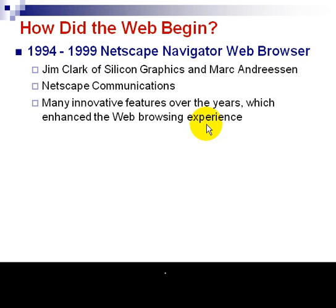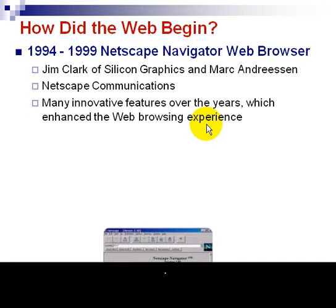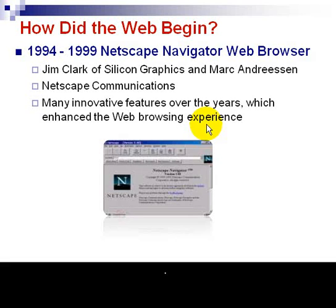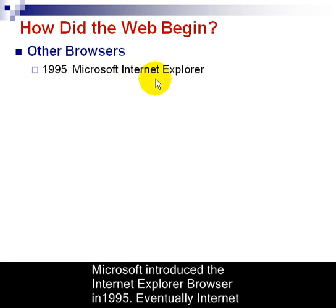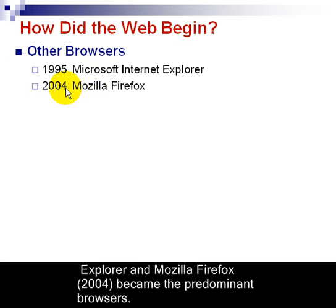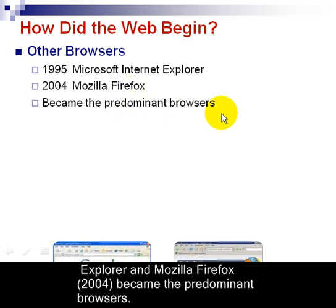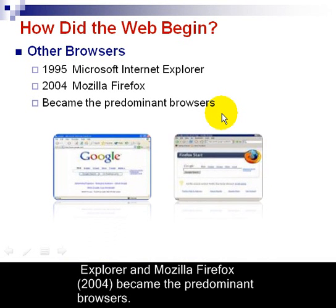Eventually, JavaScript and video support were added. Here we have version 1 of Netscape. There were other browsers emerging on the scene. Microsoft Internet Explorer was a little bit behind in the beginning and didn't really show its face until around 1995. It took until 1999 to catch up with Netscape and surpass it. And then a few years after that, Mozilla Firefox. These became the predominant browsers that we use today.